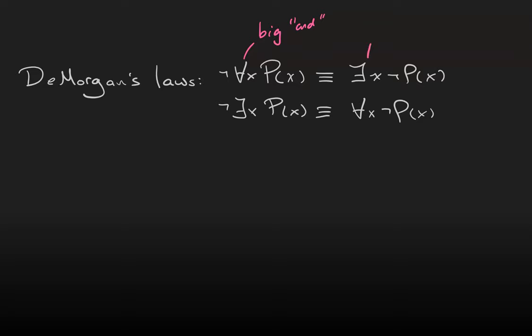We can think of an existential statement as a big OR. P has to be true for this object, or that object, or that object. So, this is DeMorgan's law. When we negate an AND statement, we get an OR statement, and vice versa.